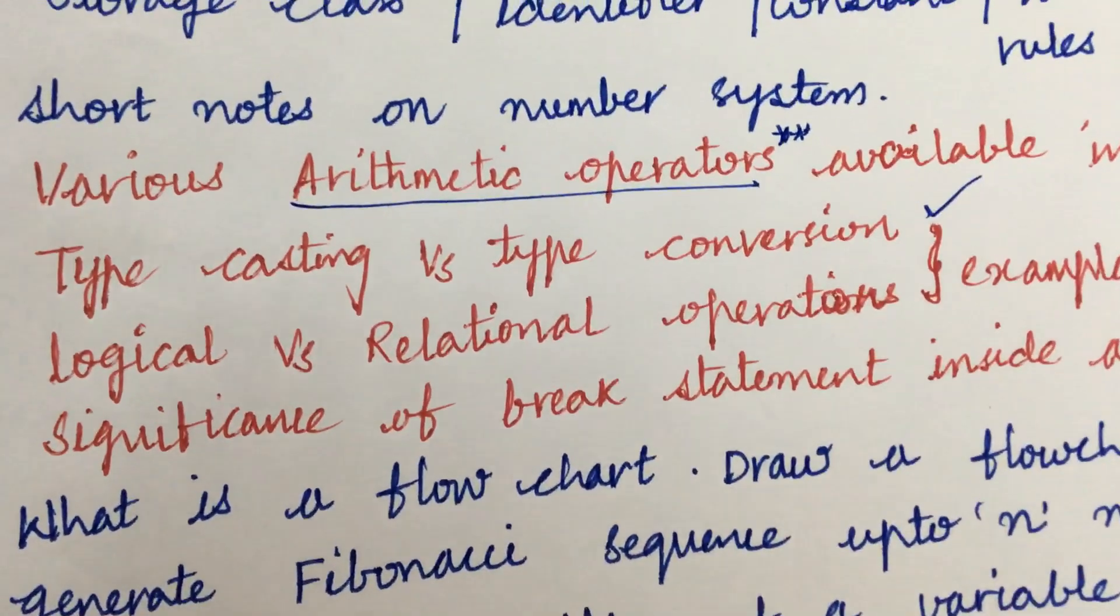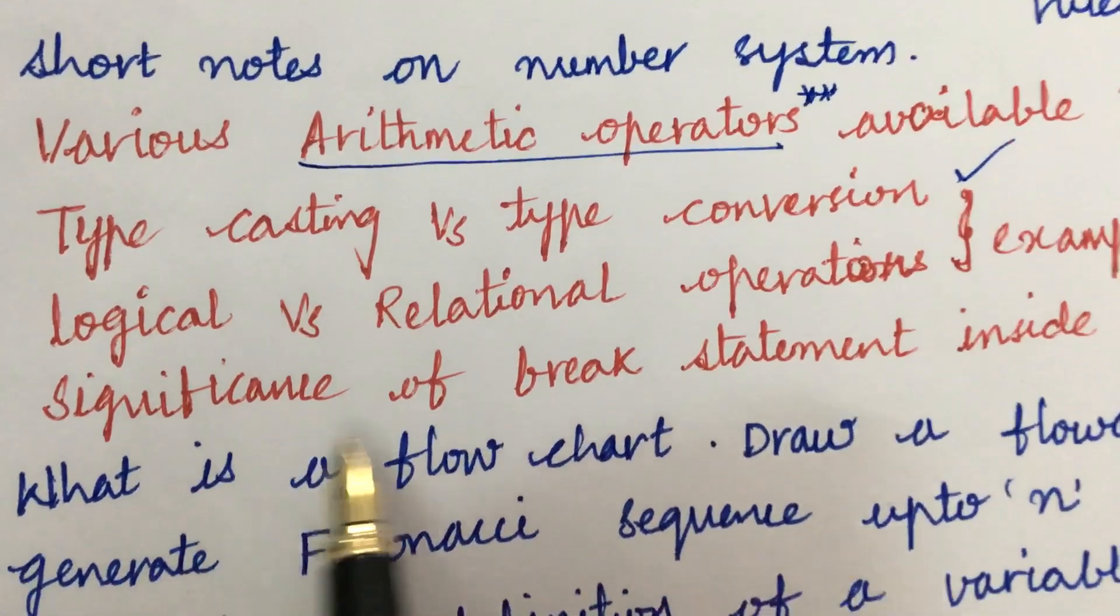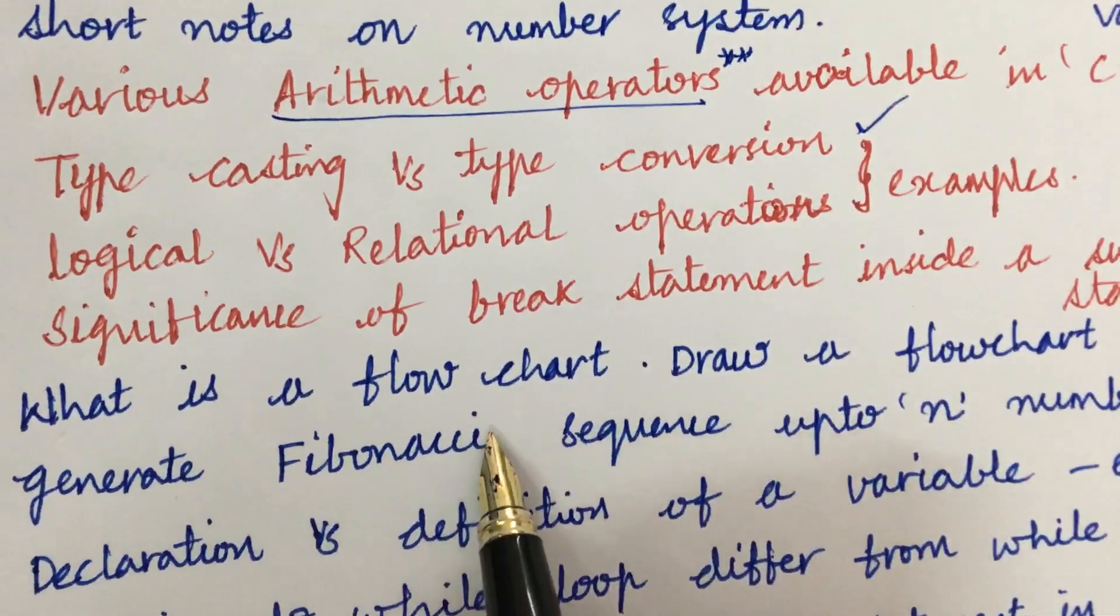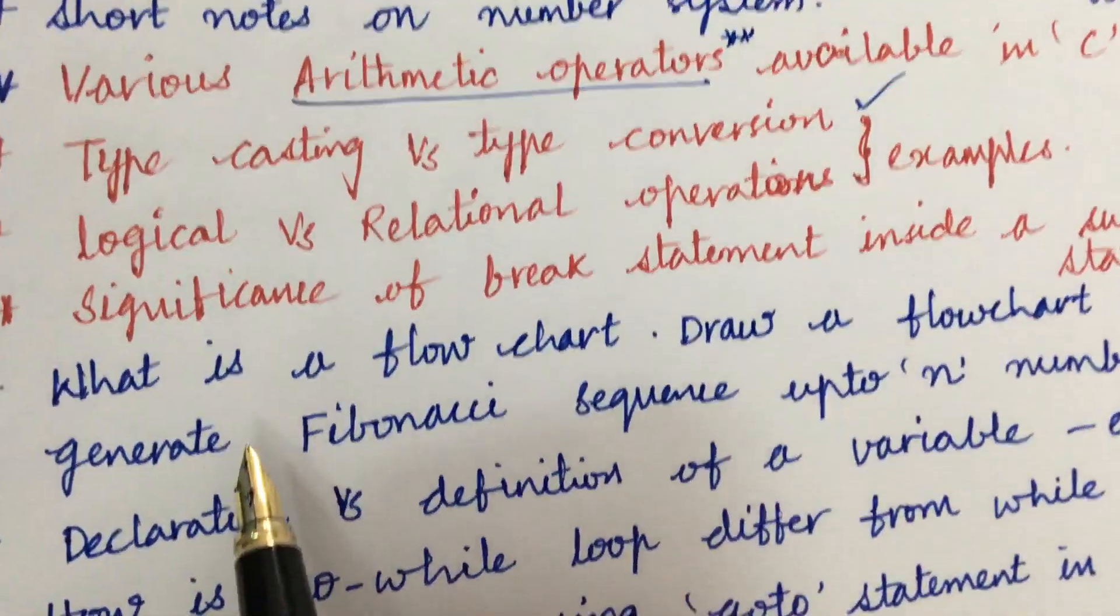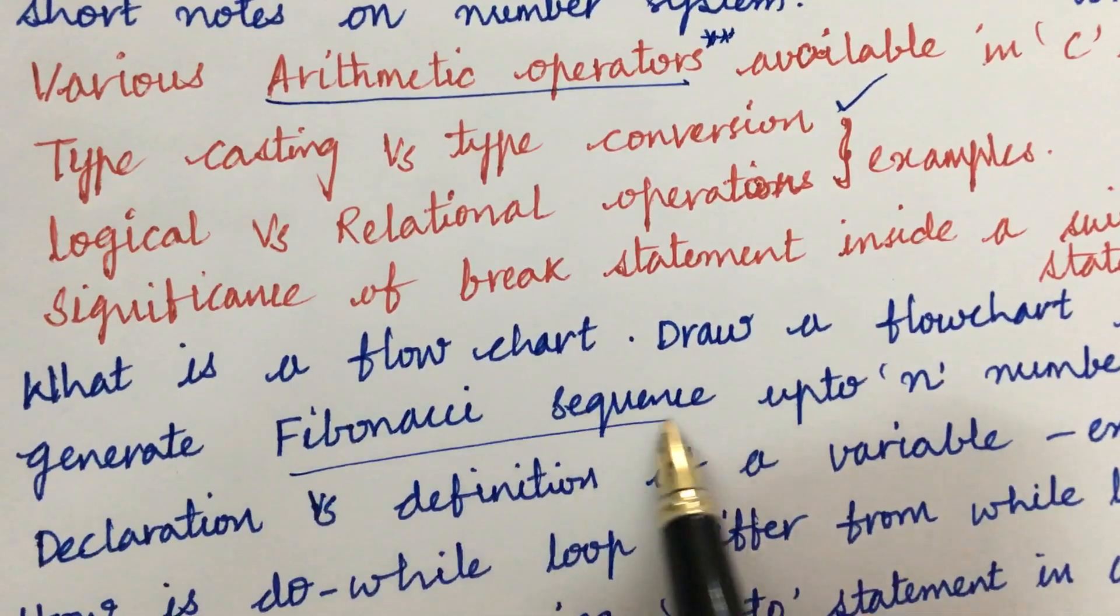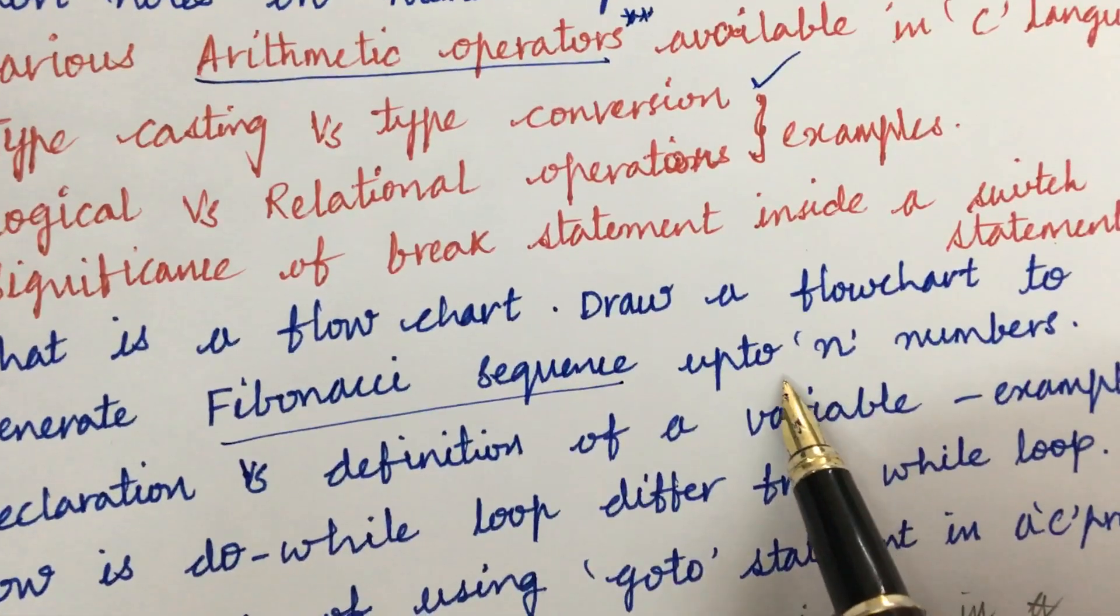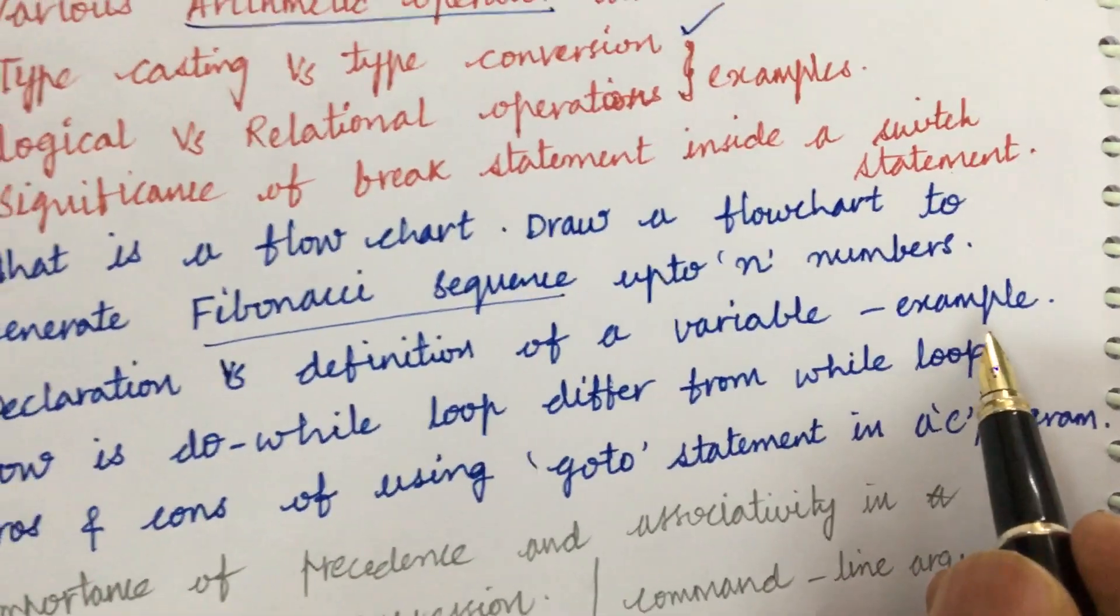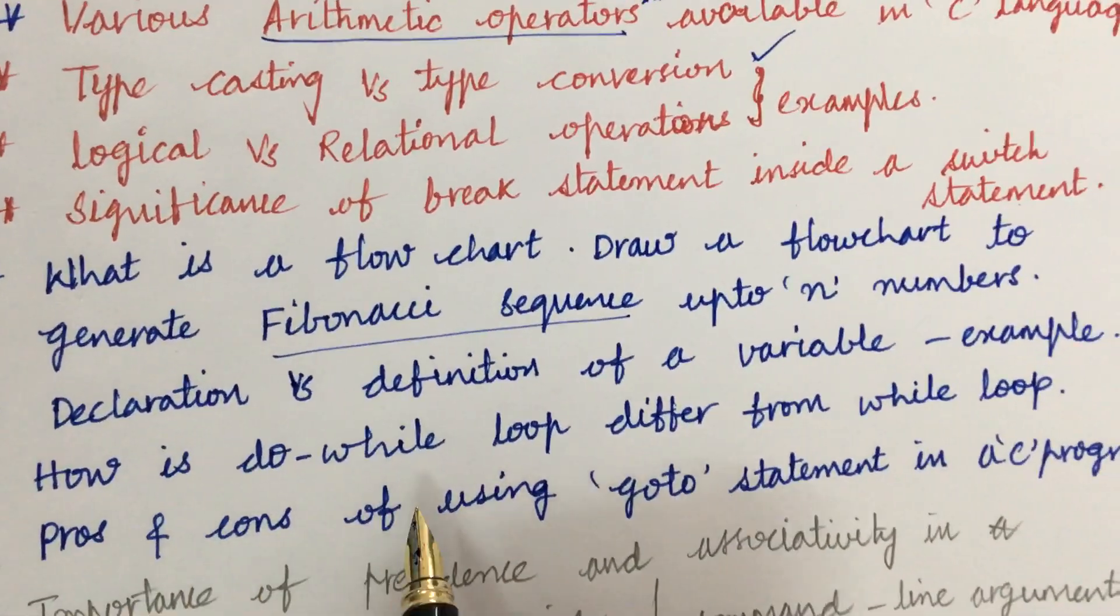Significance of break statement inside a switch statement and what is a flowchart - draw the flowchart to generate Fibonacci sequence is said to be very important up to n numbers. Declaration versus definition of a variable along with example. How is do-while loop differ from while loop is also very important.